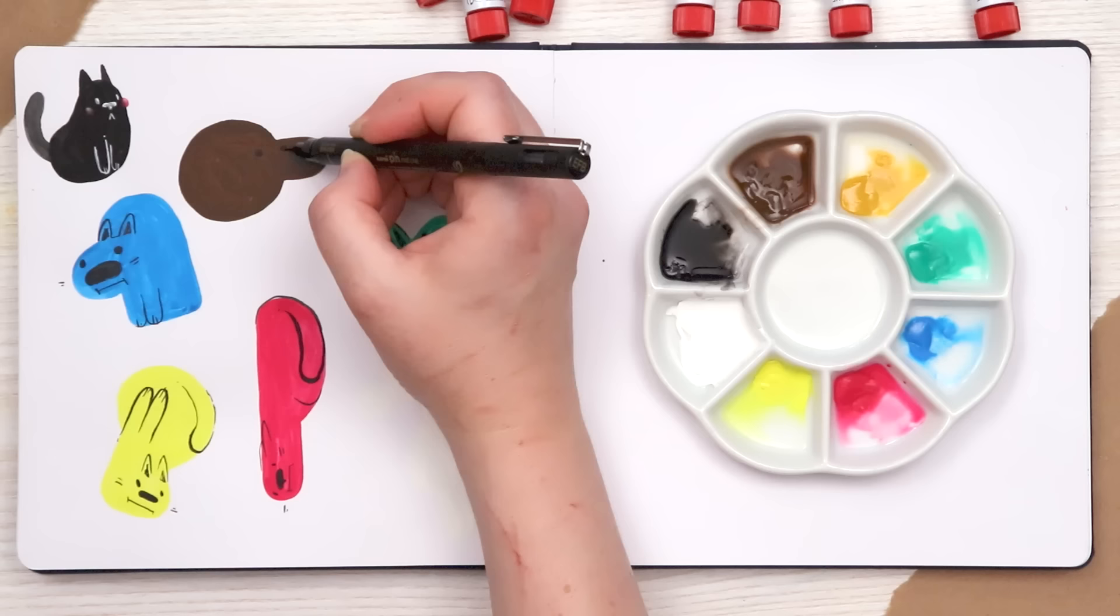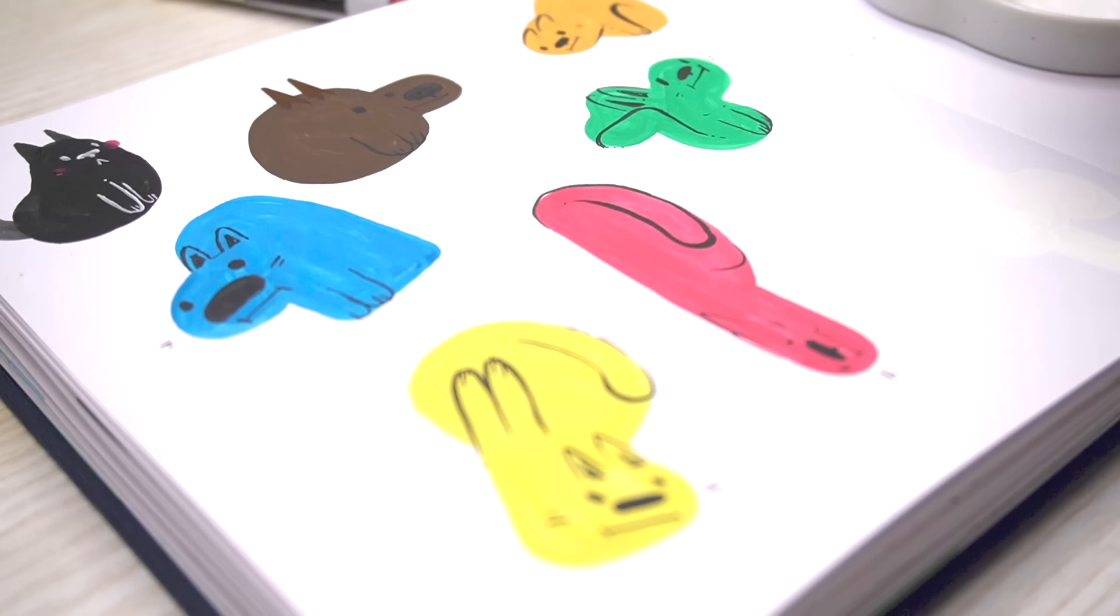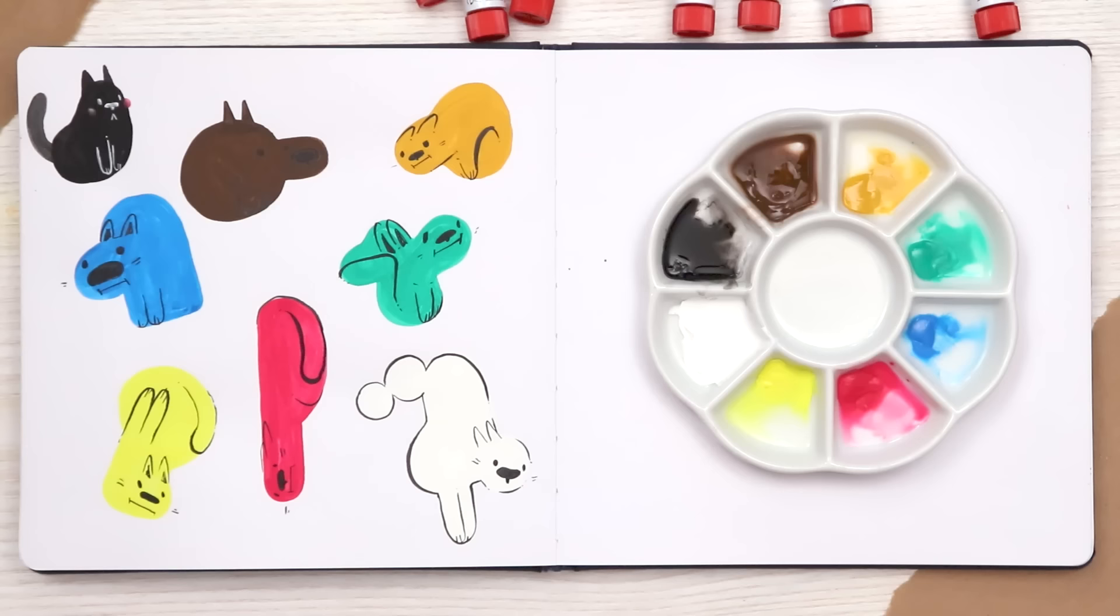You cannot, you can't. How dare, how dare, that looks like a dog. You can't make it look like a cat, that's illegal. Okay, but what about this one? You can't make this one look like a cat. I mean, come on, what is that? What is this?